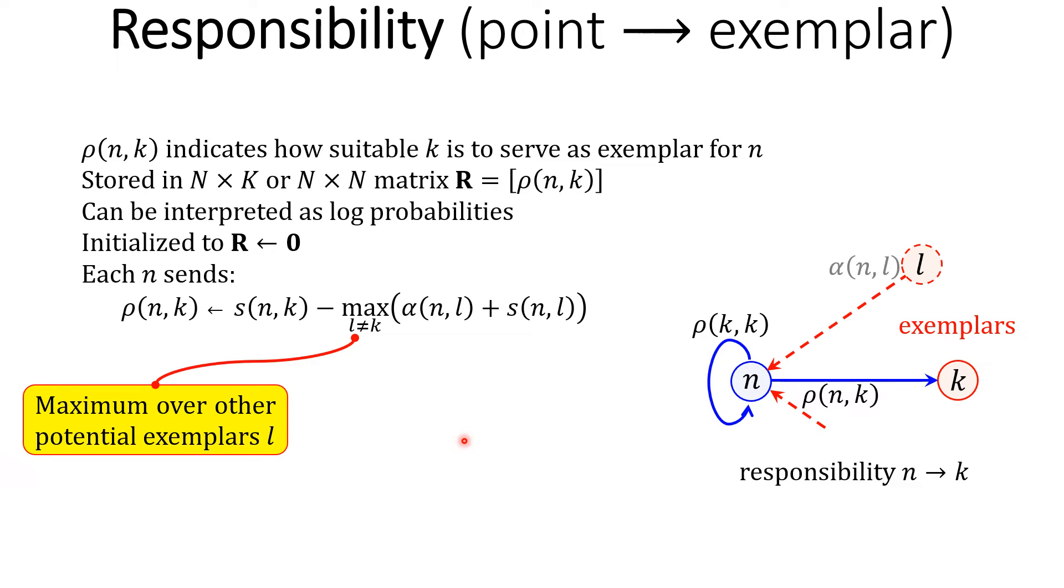Thus, rho_nk is the similarity between n and k minus this of another potential exemplar l.